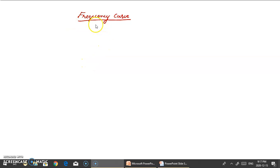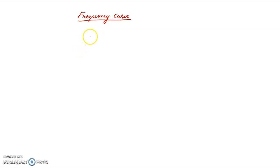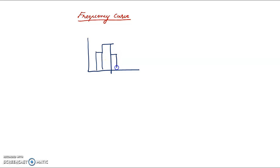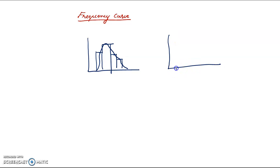Let's take a look at the frequency curve. The frequency curve is also called the frequency polygon. We can draw histograms using mid-points. We have to draw a smooth curve. The frequency curve is based on mid-values — we plot the mid-values and connect them with a smooth curve.